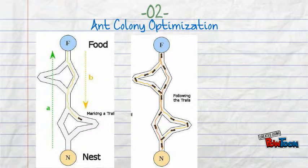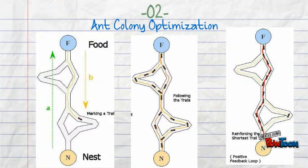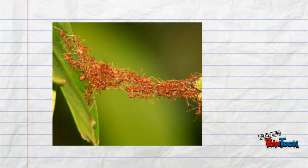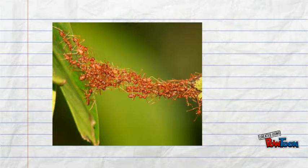If other ants find such a path, they're likely not to keep traveling at random, but to instead follow the trail, returning and reinforcing it if they eventually find food. Over time, the pheromone trails start to evaporate, thus reducing its attractive strength.